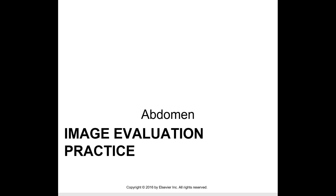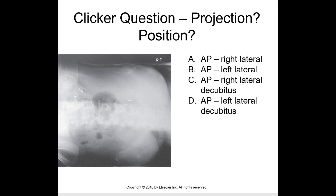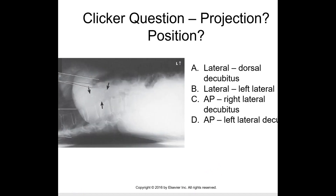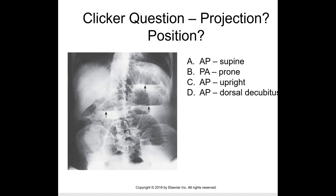Looking at some images: the first projection is an AP left lateral decubitus — that's the left side down, right side up — with the marker indicating the upside. The next answer is a lateral dorsal decubitus: the patient is laying with the left side up against the IR, with the arrow on the right side. The last image shows an AP supine upright as indicated with the arrows.